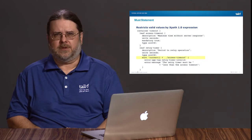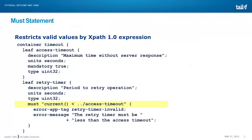First, we'll take a look at the must statement. Must is an important statement in Yang because it allows us to express validation constraints right in our data model, which allows ConfD to automate enforcement of these semantic validation constraints or relationships between data without having to write any code, because it's precisely defined in the Yang data model using things such as the must statement.